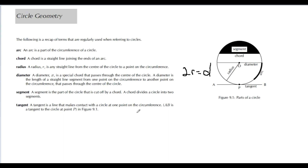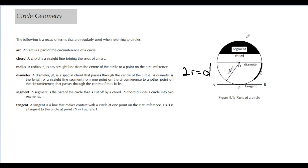A tangent is a straight line that makes contact with the circle at one point of the circumference. AB is a tangent to the circle at point P. The key thing about tangents is they literally touch the circle at only one point — if a straight line went through the circle touching at two points, that is not a tangent. Tangents only touch at one point.